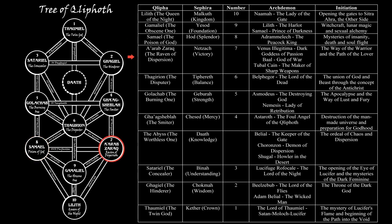The fourth initiation is that of Aab Zaraq, the Raven of Dispersion. Here we have three ruling forces: the Dark Venus, the Goddess of Passion; Baal, the God of War; and Tubal Cain, the Maker of Sharp Weapons. This Qliphothic realm corresponds to the Sephirah Netzach, Victory, and its initiation is both the way of the warrior and the path of the lover.